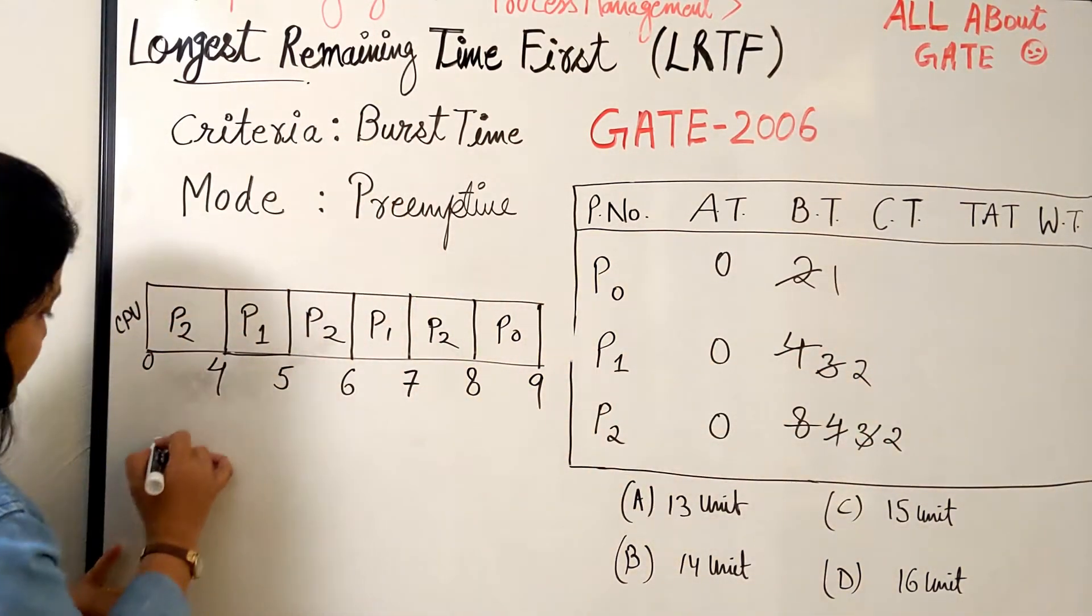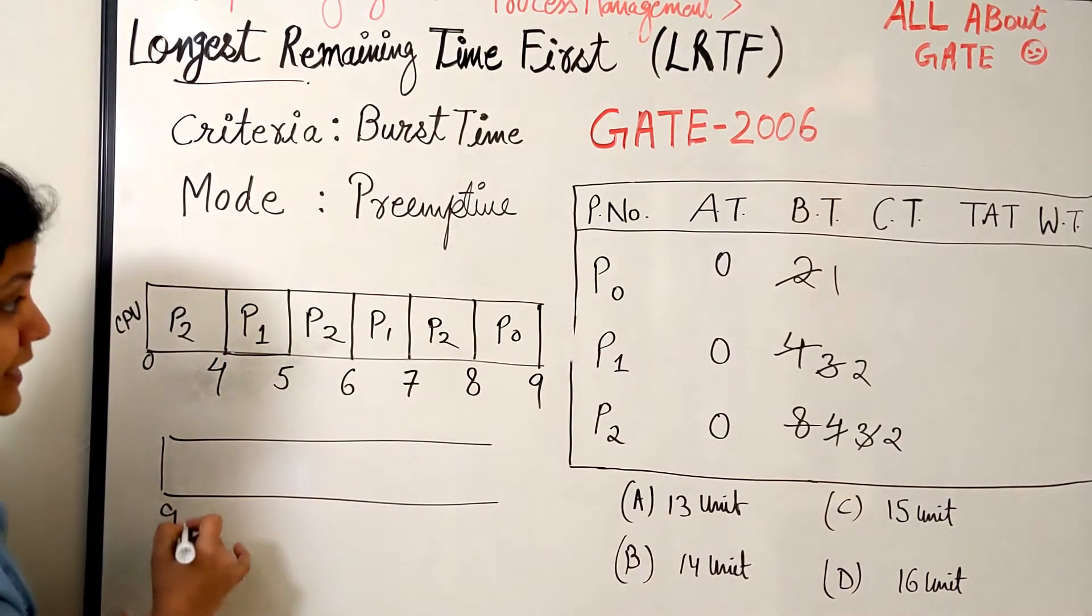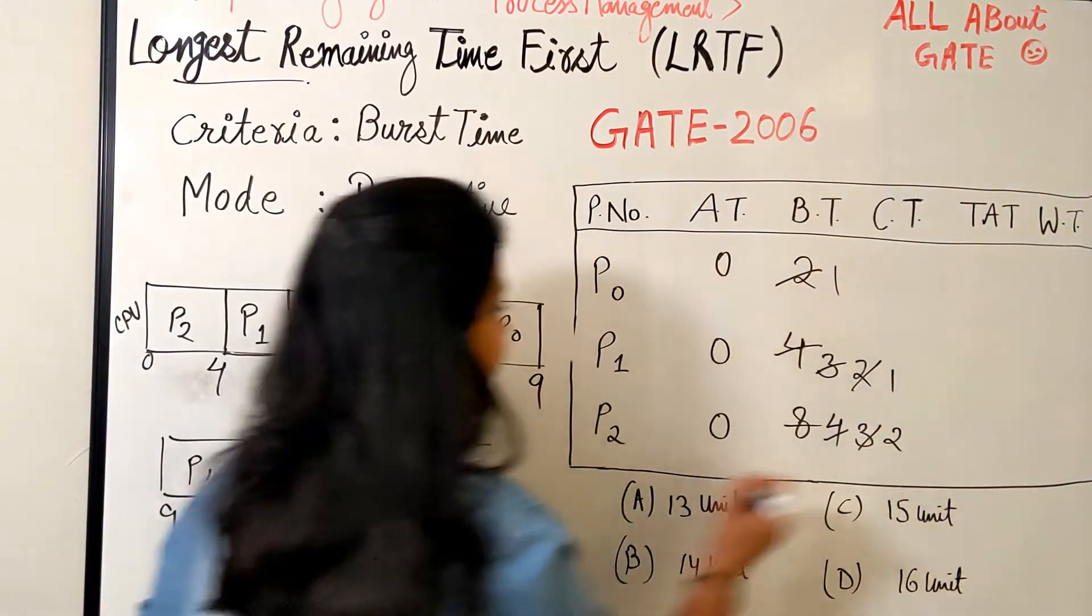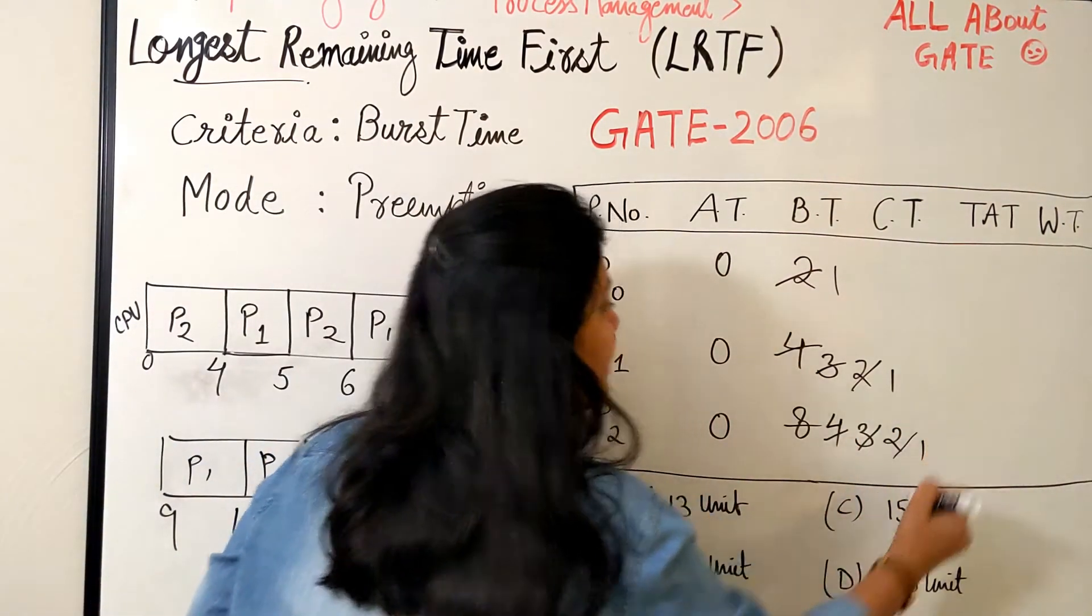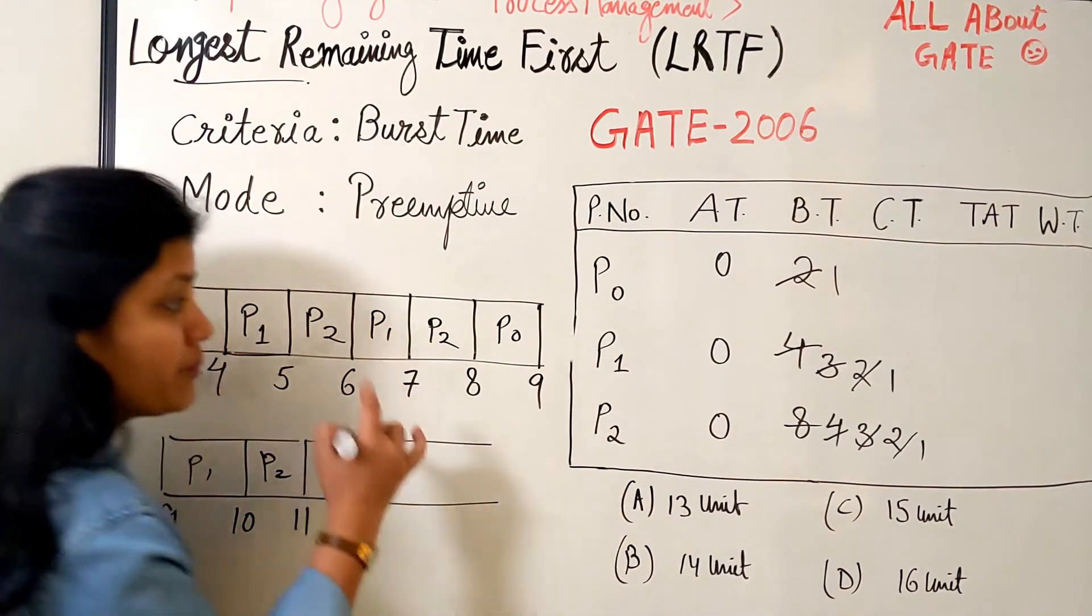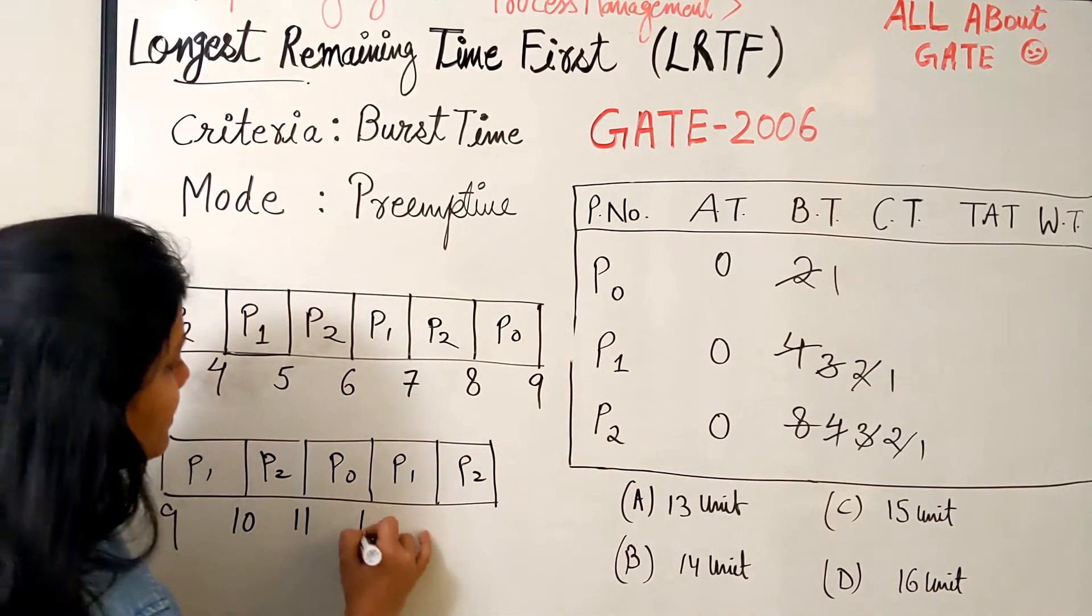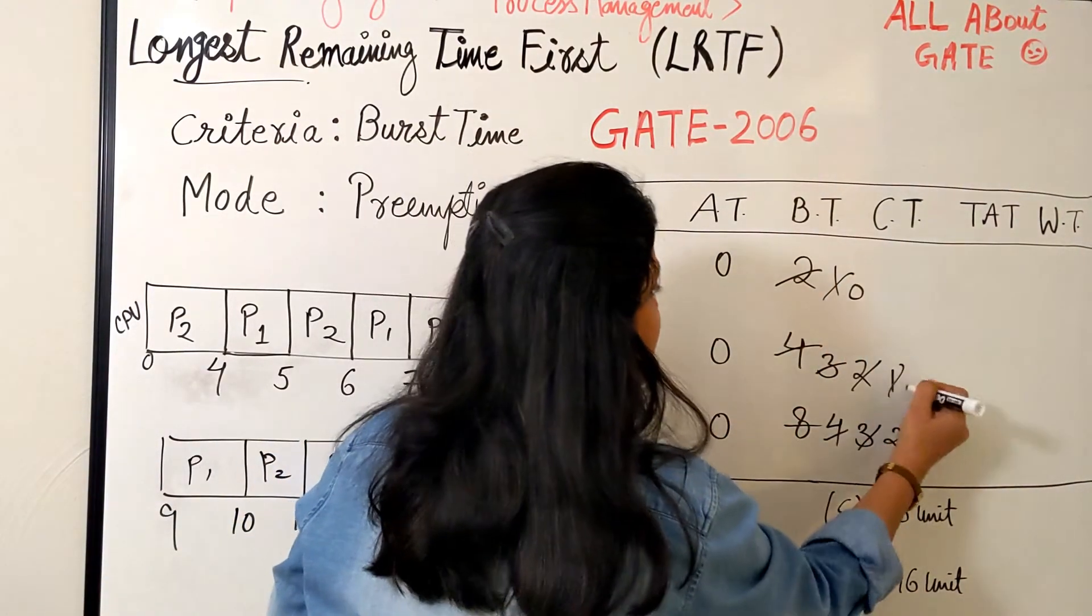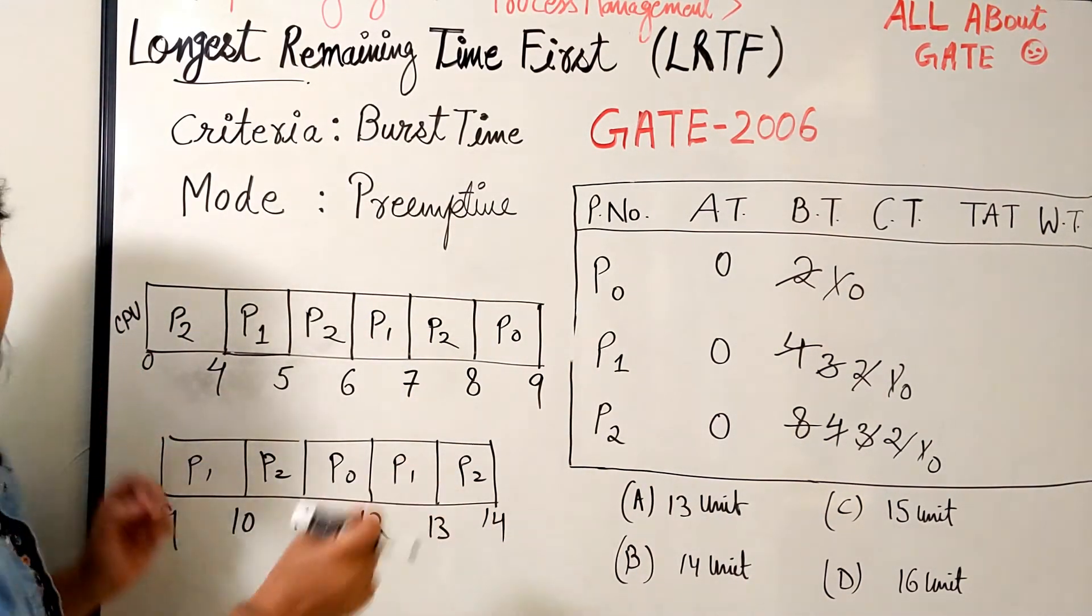P0 was scheduled next, then P1 is scheduled for one burst and becomes 1. Then is P2, it becomes 1. Now we have all three processes with single burst requirement and we go by the process IDs, so P0, P1, and P2 all get finished. So it becomes 12, 13, and 14, and this is how the scheduling gets finished from length 0 to 14.